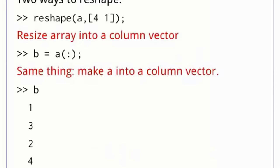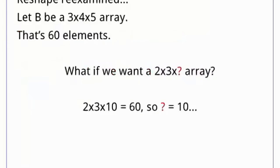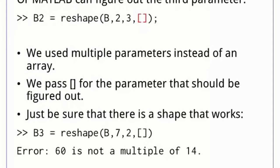Arrays can also be reshaped using two methods. The first is the function reshape. The first parameter to reshape is the array you want to reshape, while the second is a vector of dimension sizes. In this case, we want to transform a into a vector with four rows in one column. Since vectorizing an array is such a popular operation, there is an equivalent shortcut called the colon operator. If b is a 3 by 4 by 5 array, then it has 60 elements. We want to transform it to a 2 by 3 by something array, and it isn't too hard to see that the third dimension must be of size 10. MATLAB can compute a single missing dimension in reshape — we pass each dimension size as a separate parameter, and for the last size, we put in a pair of empty brackets.